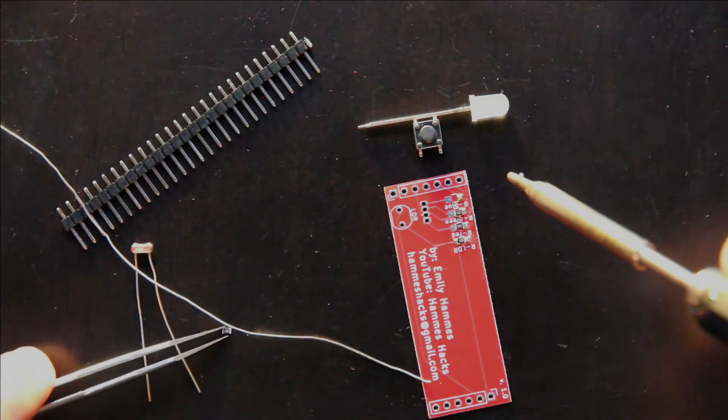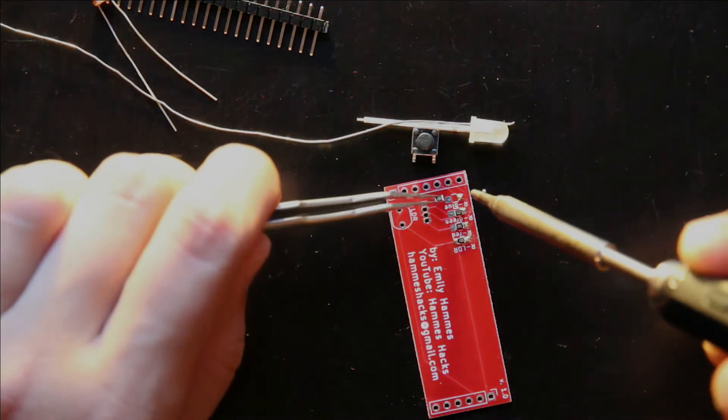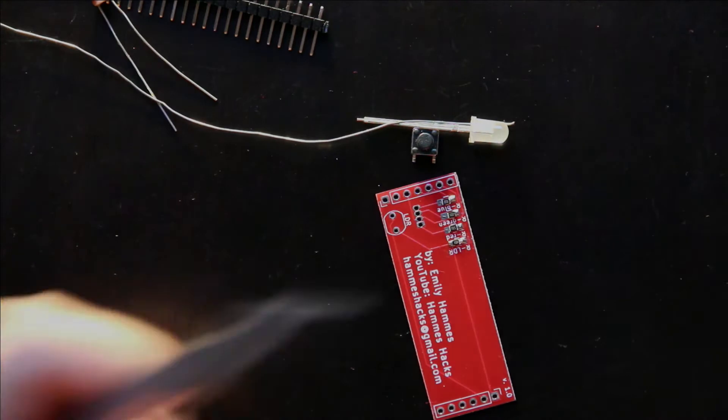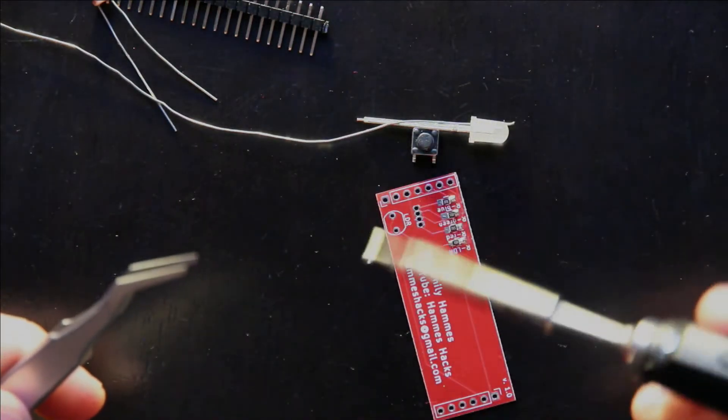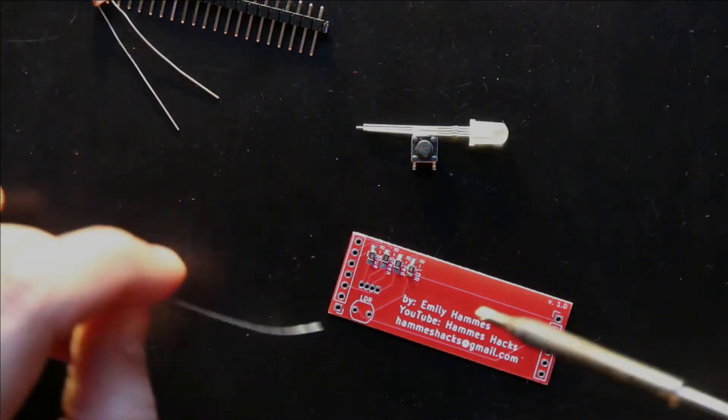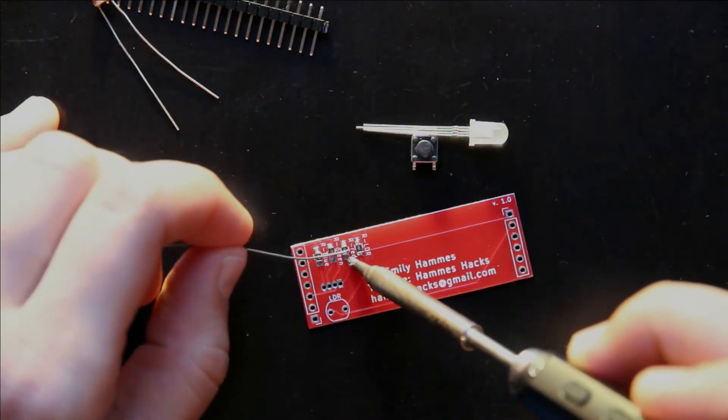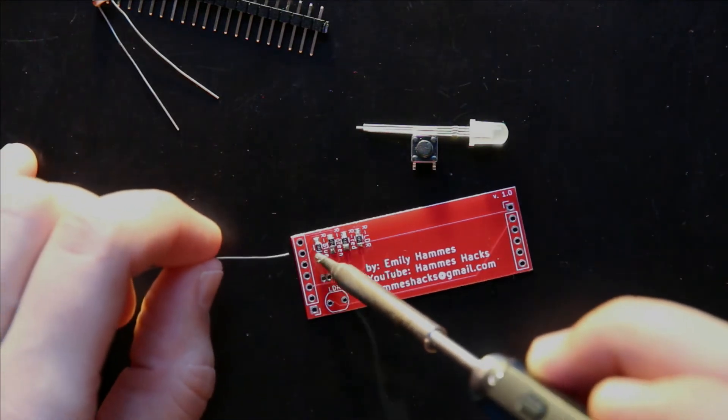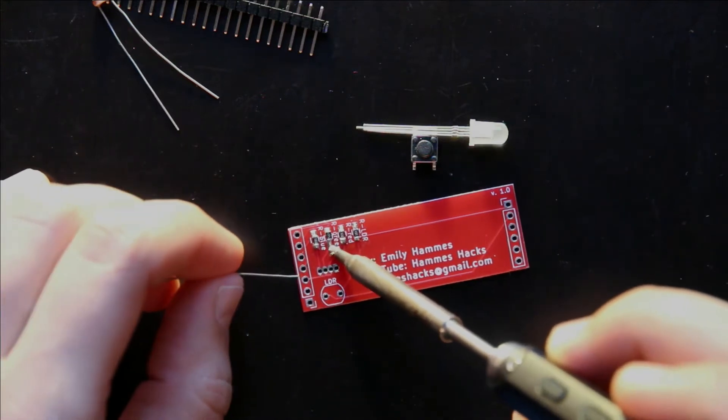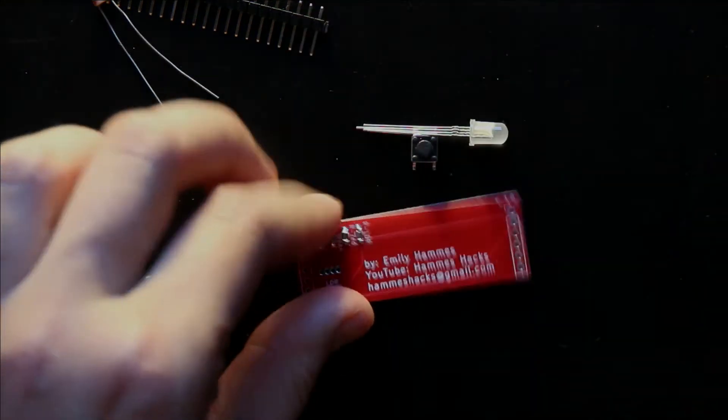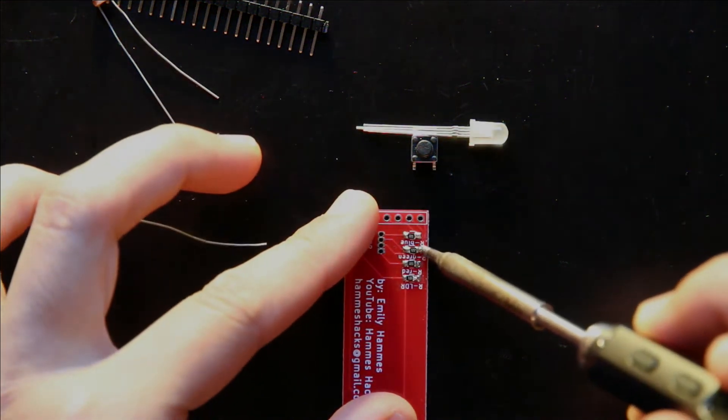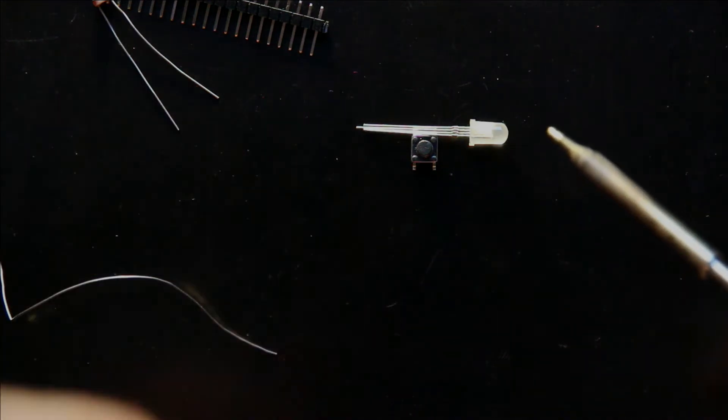And when soldering surface mount components, it's really important to have the maximum contact that you can with the table. So you want to be resting your wrist or the side of your hand on the table when you solder. And that way you don't wiggle around your tip too much. And I'm just going to check that to make sure that each one has a good contact. I'm going to touch up these a little bit because they don't look great. Now they look good.